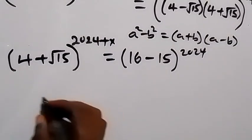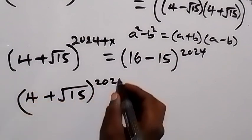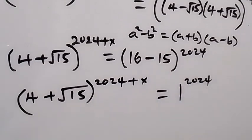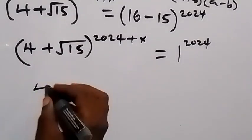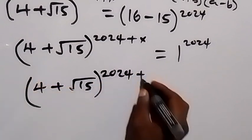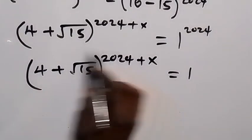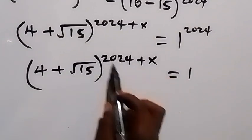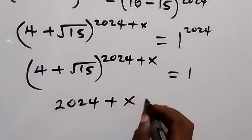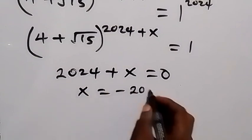We still have 4 plus root 15 raised to power 2024 plus x, equals 16 minus 15 raised to power 2024. Now 16 minus 15 is 1, and 1 raised to power 2024 is 1. So we have 4 plus root 15 raised to power 2024 plus x equals 1. For this to equal 1, the power must be 0, so we equate the power to 0: 2024 plus x equals 0, which means x equals minus 2024.